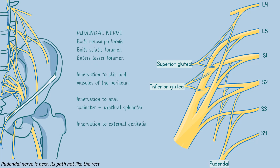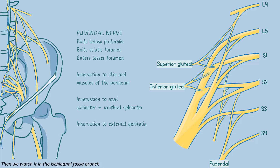The pudendal nerve is next, its path not like the rest. Under the piriformis, it exits with nerve roots S2-3-4. It moves through the pudendal canal and then we watch it in the ischioanal fossa branch — squeezing the sphincters both of them, levator ani group, perineum too, and travels to the penis's end.